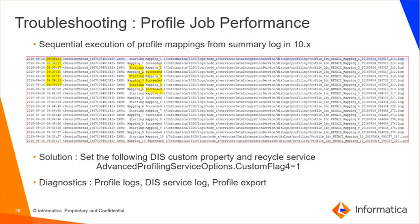Whenever a profile execution is taking longer than usual, it is worth reviewing the profile summary log. You may see a pattern where mappings are running in sequential order instead of concurrently. This is a known issue in 10.x when the profile or scorecard source is on a logical data object. The solution is to set the DIS custom property AdvancedProfileServiceOptions.CustomFlag4 equals to 1. Such issues are usually noticed after an upgrade. To troubleshoot this scenario, collect profile logs, DIS service log, and profile export and send them to Global Customer Support.